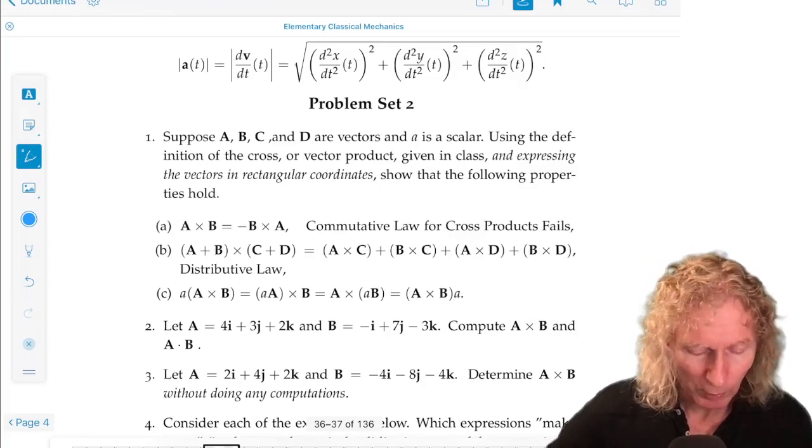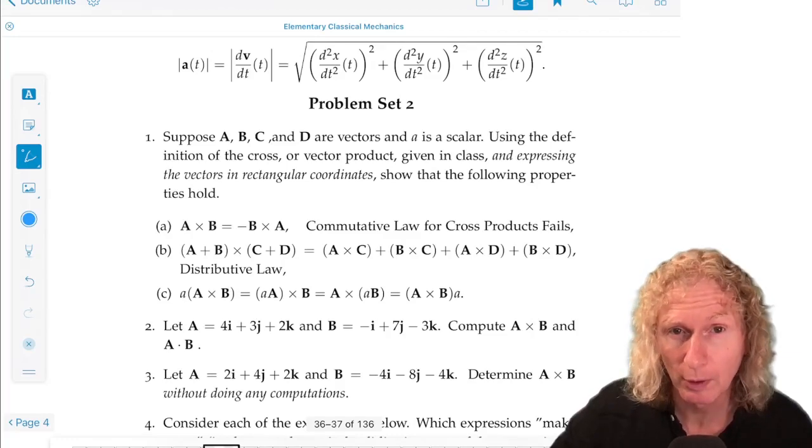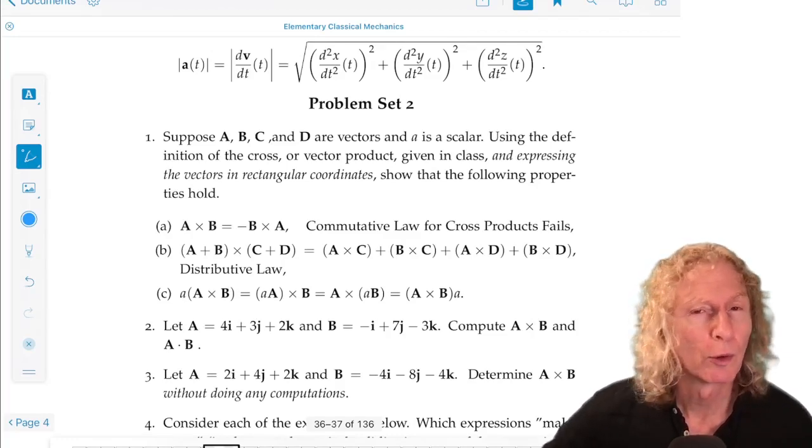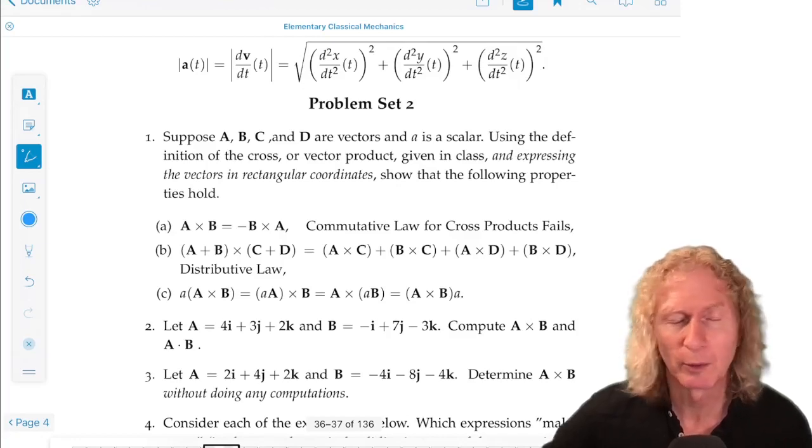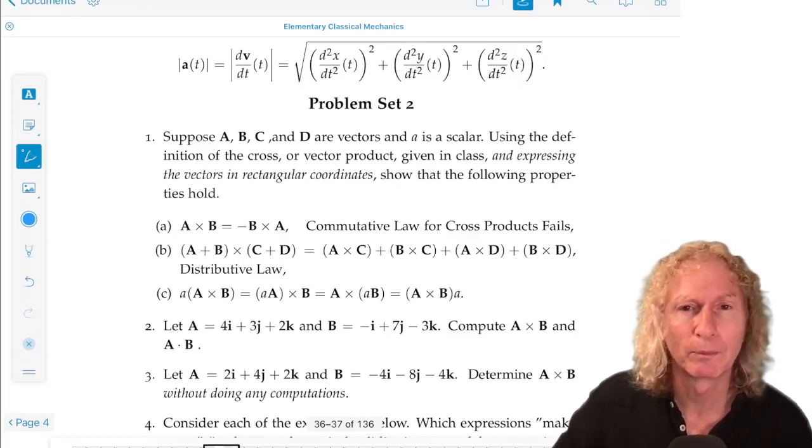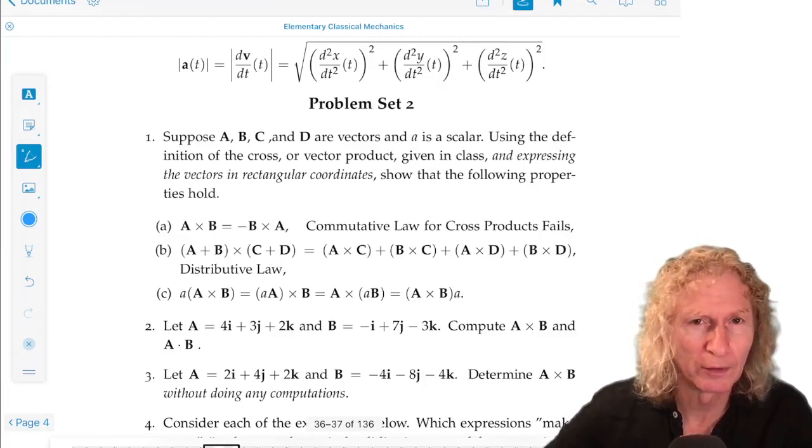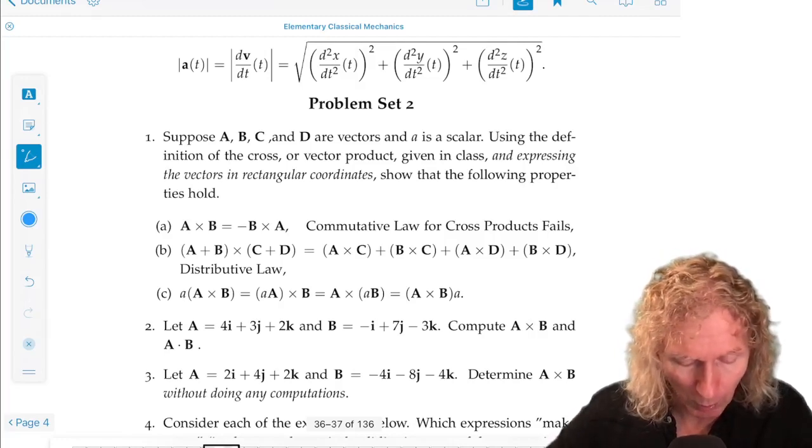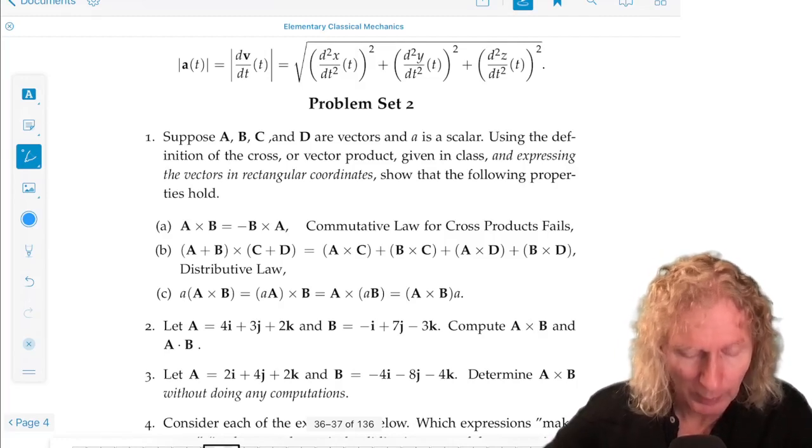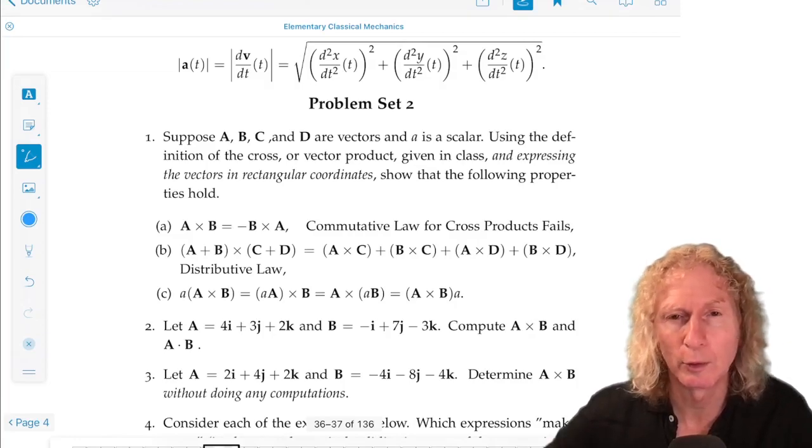In the previous chapter, we derived a lot of basic properties for the dot product in a coordinate-free manner, but now I want to derive similar properties for the cross product. And I'm going to allow you to use coordinates in this case. So A, B, C, and D are vectors, problem 1, and we're going to express them in Cartesian coordinates, the I, J, K unit vectors.